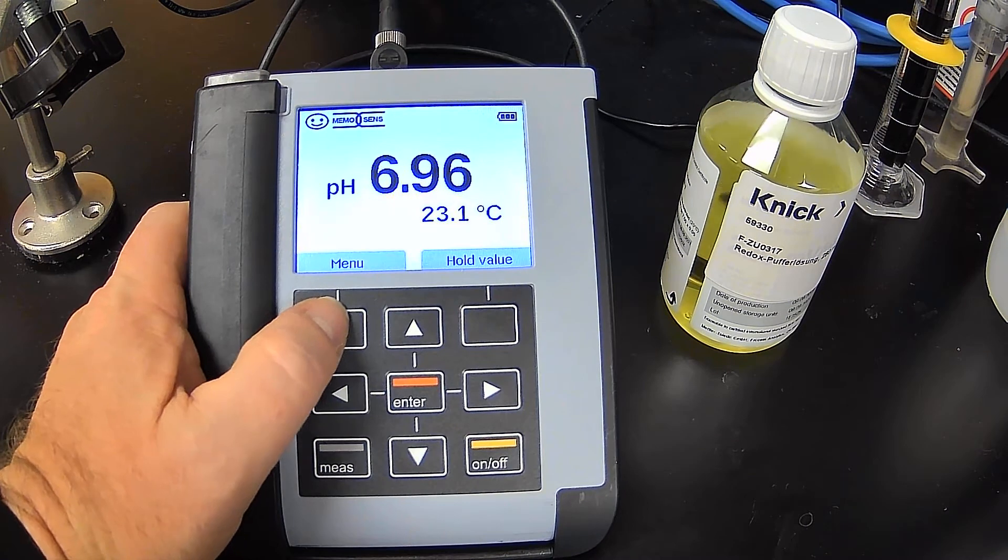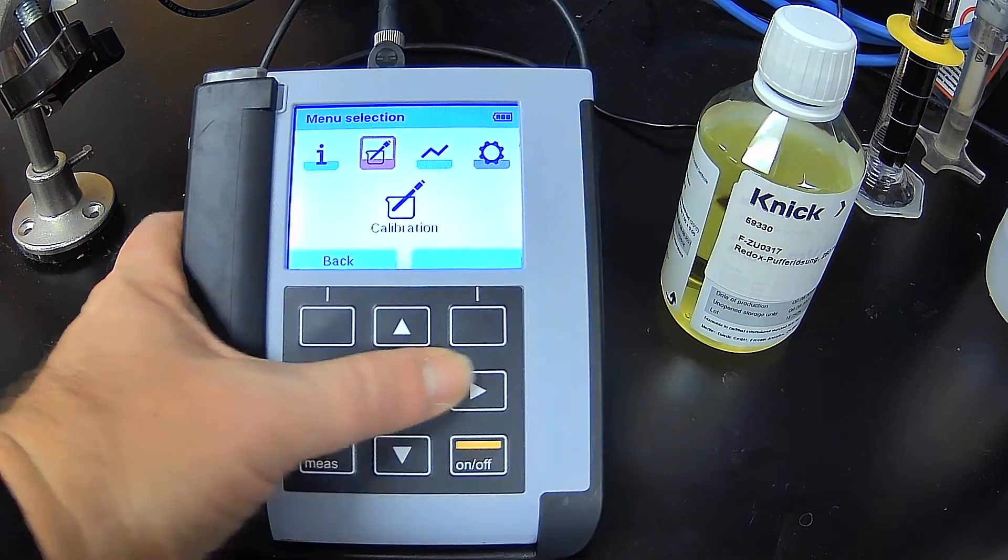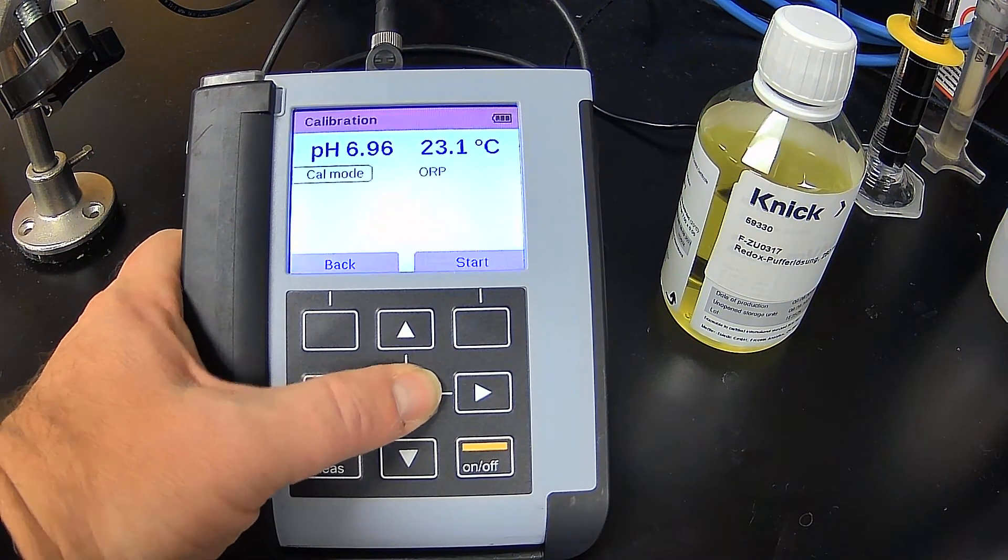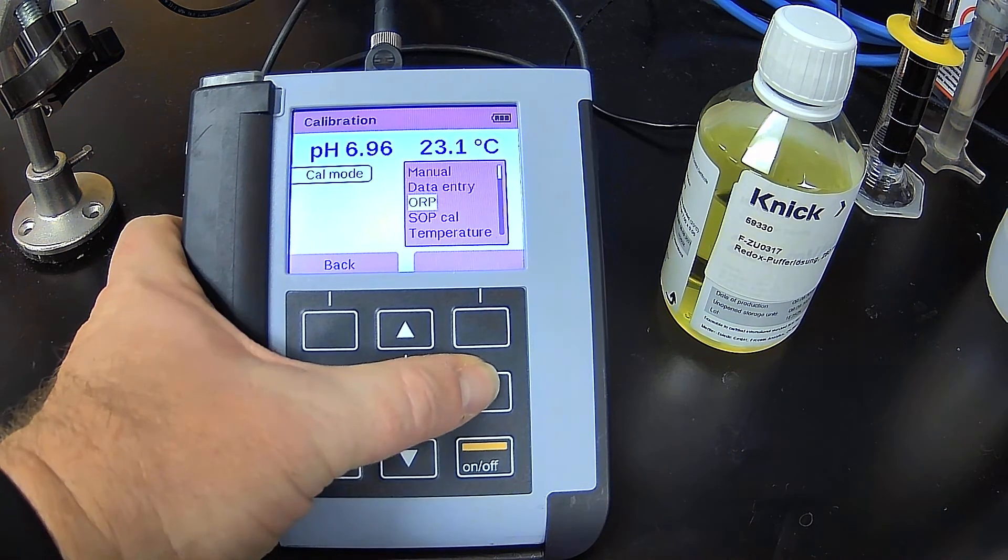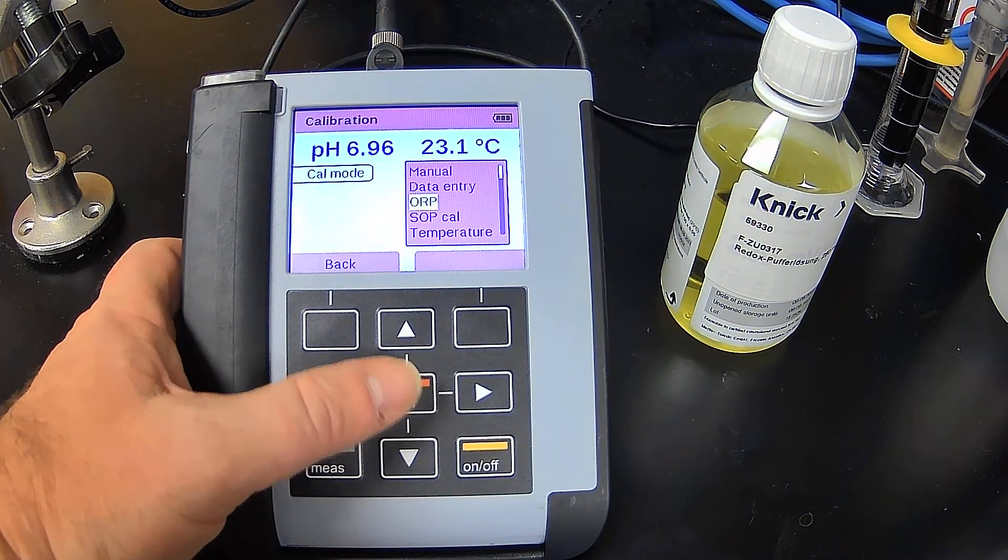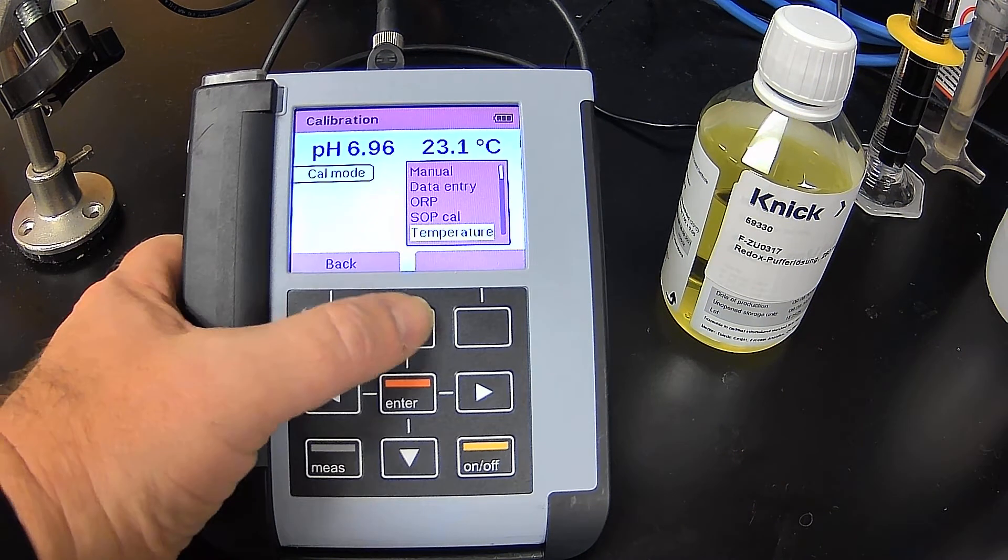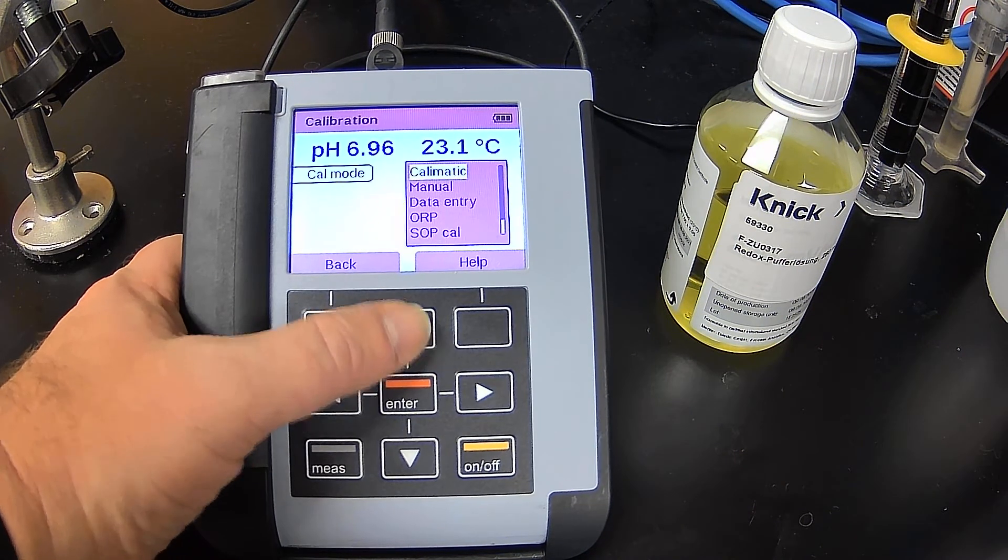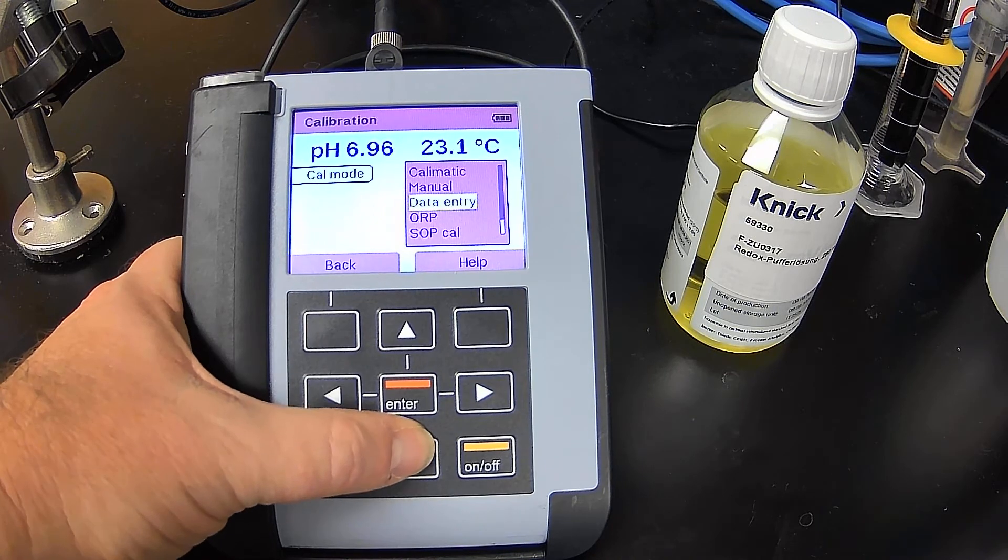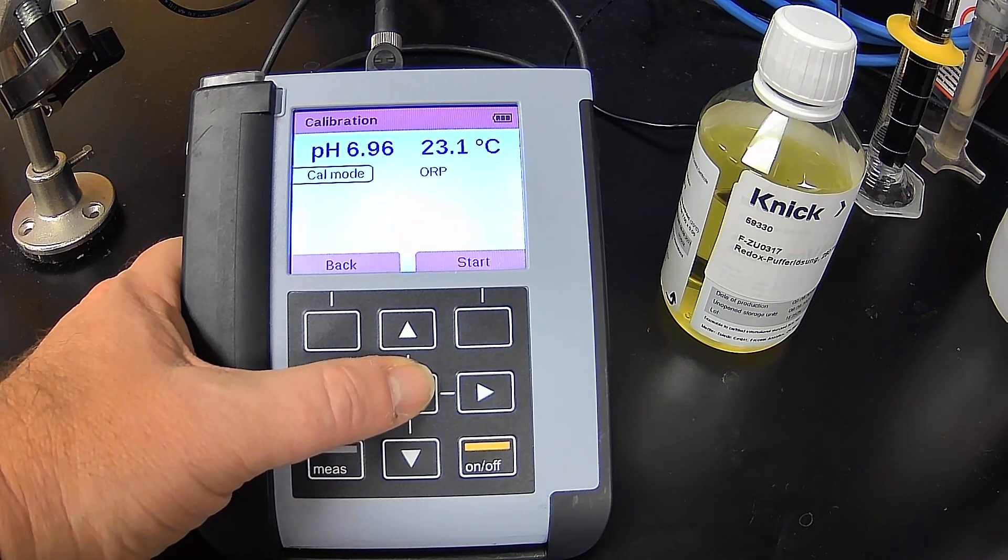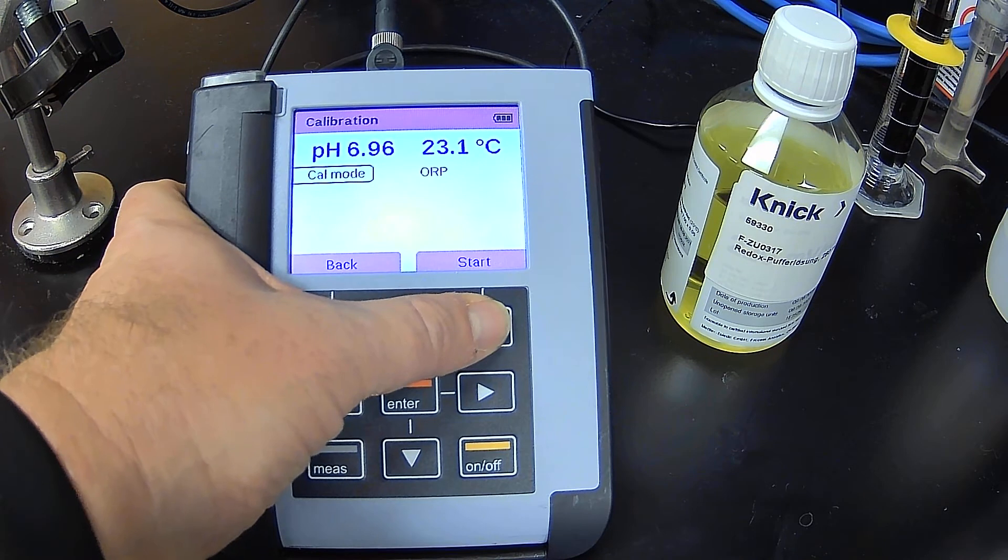So let's go ahead and hit menu, calibration. Now here we select how do we want to calibrate. So right now we're going to do ORP. Okay. So I hit enter. I hit start.